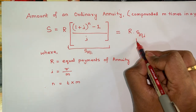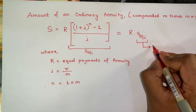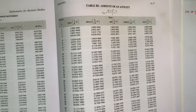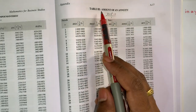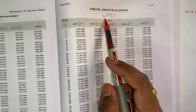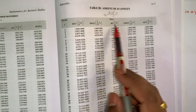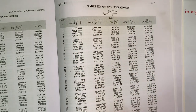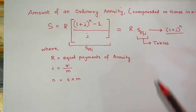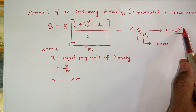We can find the value of S(n, i) from the tables given at the back side of the book. In the annuity table, S(n, i) is provided for various rates and different time periods. S(n, i) is essentially the summation of (1 + i)^n terms.